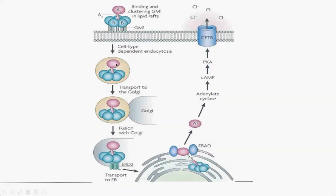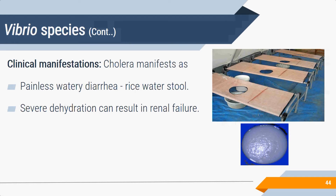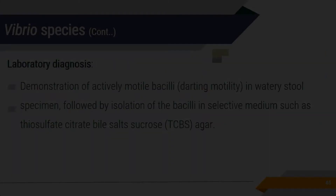The cholera toxin has five binding subunits and one active subunit. The binding subunits attach to GM1 receptors on intestinal epithelial cells; the active subunit activates adenylyl cyclase, raising cyclic AMP levels, which causes massive fluid and electrolyte loss into the lumen. This results in painless, profuse, watery diarrhea with a characteristic rice-water stool appearance. Severe dehydration can lead to renal failure. Treatment requires oral or IV fluid replacement depending on severity; antibiotics can be given in severely dehydrated patients.